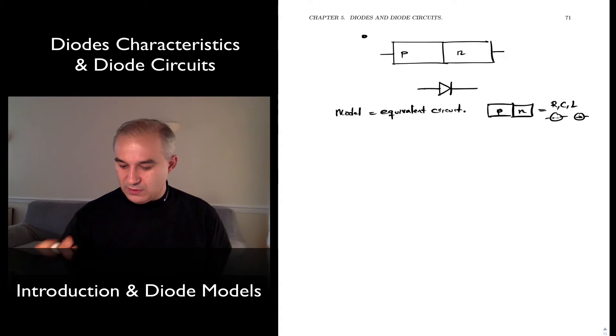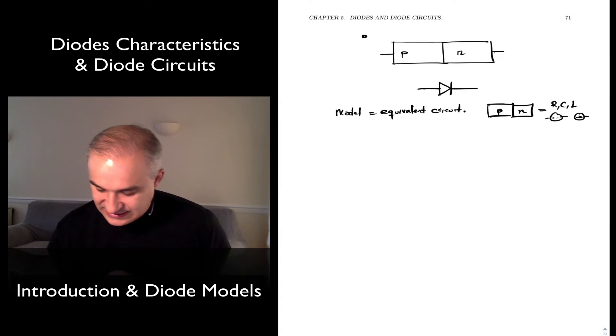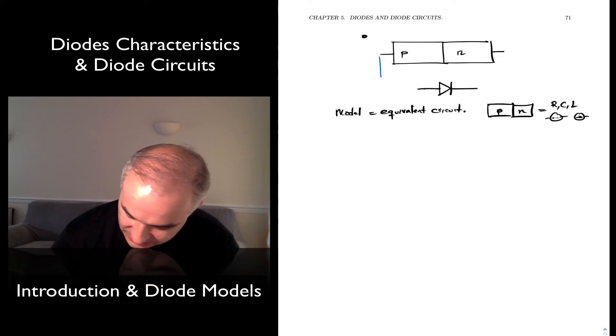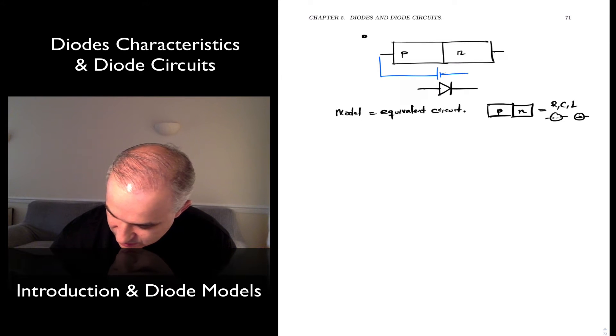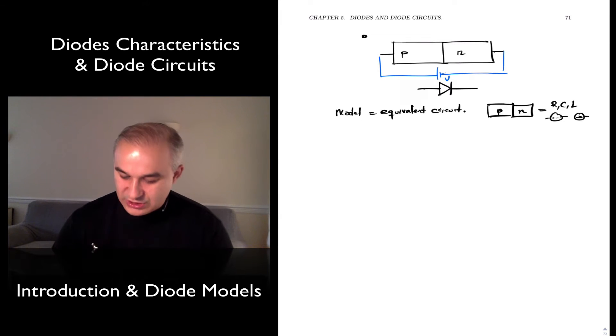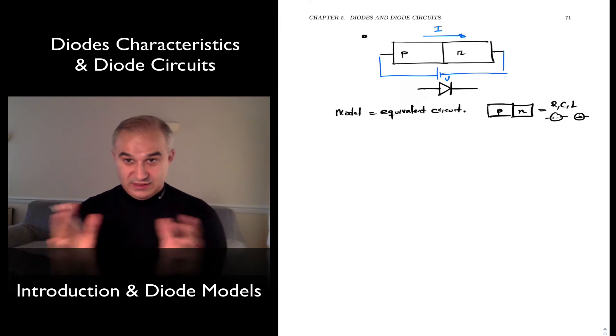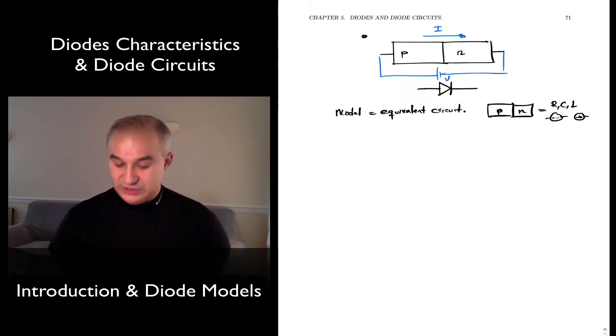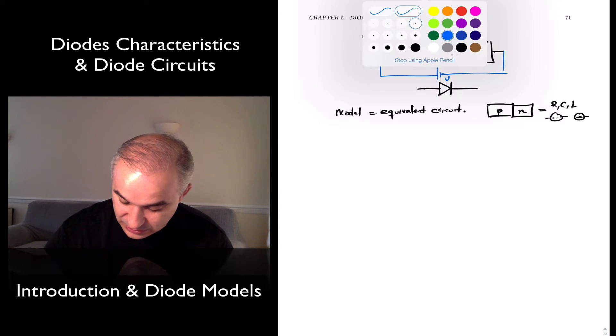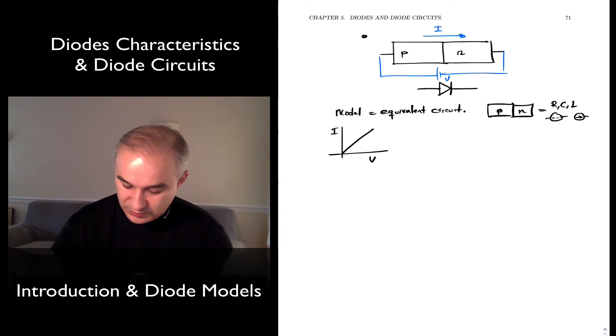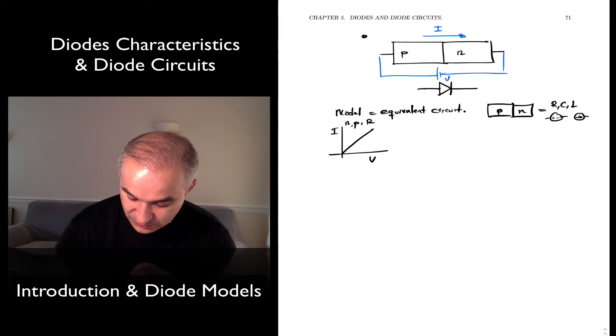The way to come up with a model is to first look at the current-voltage characteristics. What happens if we connect a voltage source around here? What is going to be the current in both directions as a function of that voltage? We know that for a resistor, there's a linear relationship, or for p-type or n-type by itself. You increase the voltage and the current just goes linearly. This will be for n-type, for p-type, for a resistor.